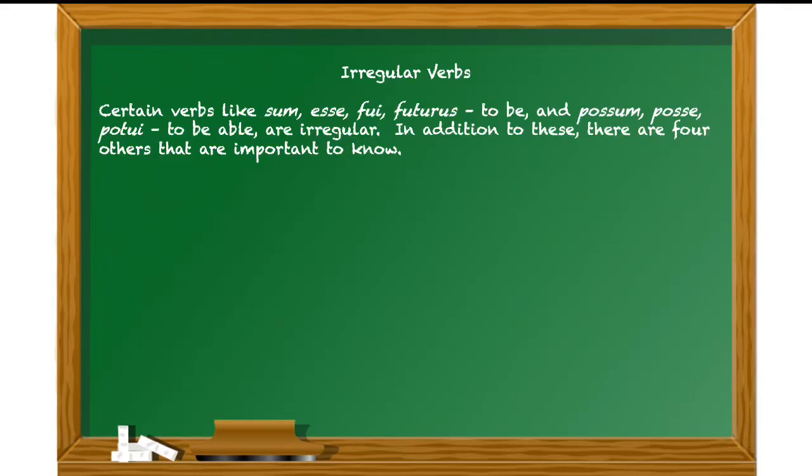There are certain verbs in Latin that are irregular. Some verbs that you already know, like sum, esse, fui, futuris, to be, and possum, posse, patui, to be able. They're obviously irregular in their dictionary entries. You can tell the second dictionary entry doesn't end with an re, and there's no real way to tell a particular conjugation that these verbs belong to. They're irregular in some of their conjugated forms as well. But in addition to these, there are some other verbs that are very important to know.